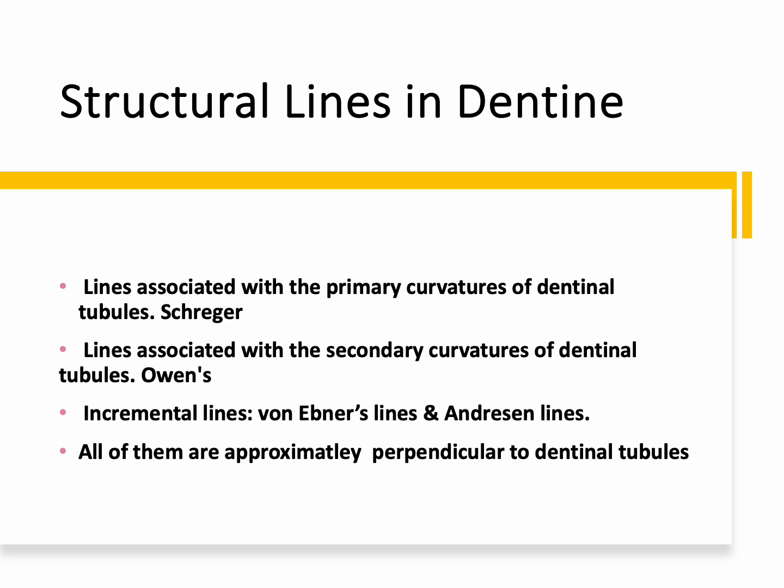A quick revision of the structural lines in enamel: if you remember, there were two different types. Both of them indicated the activity and inactivity periods of enamel secretion. They were named the cross striation, which represented daily incremental lines, and the enamel striae or incremental lines of Retzius, which represented the weekly secretion of enamel.